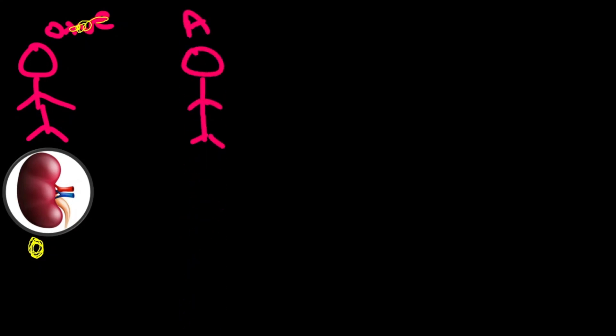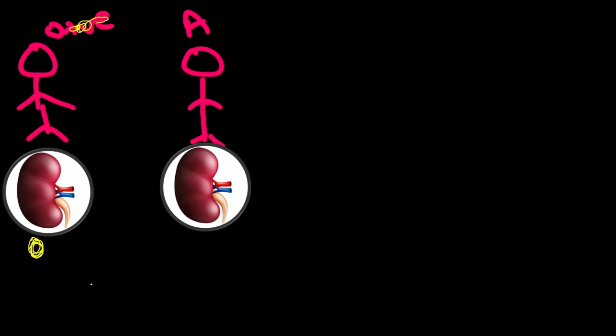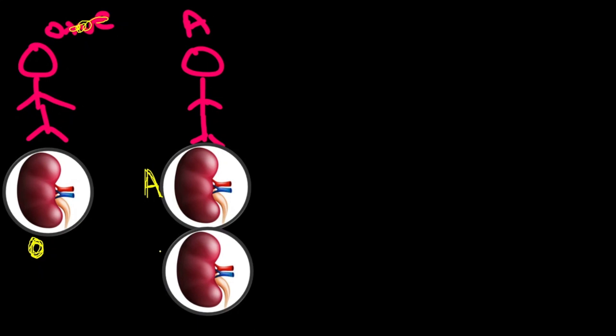If the patient is A blood group, they can accept a kidney from an A blood group donor, and they can also accept from an O blood group donor, since O has no antigen and the patient won't destroy that kidney.